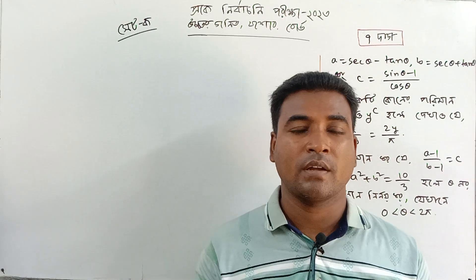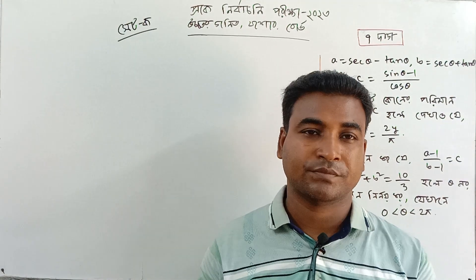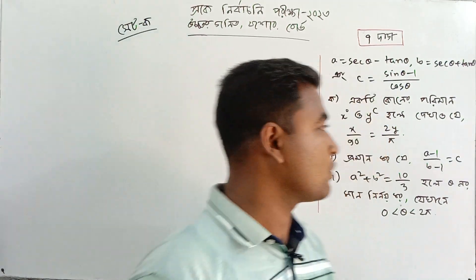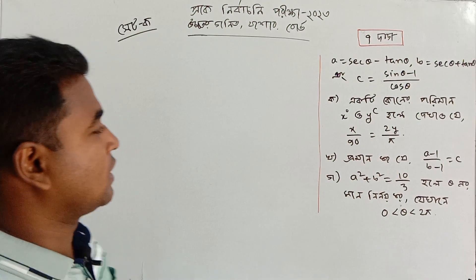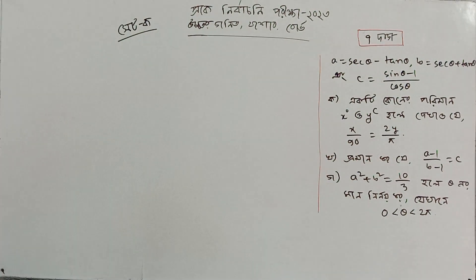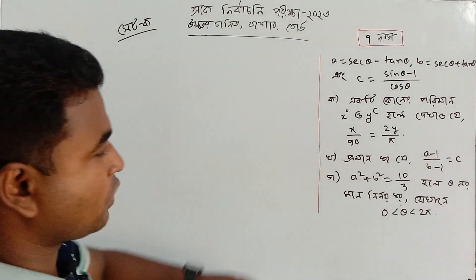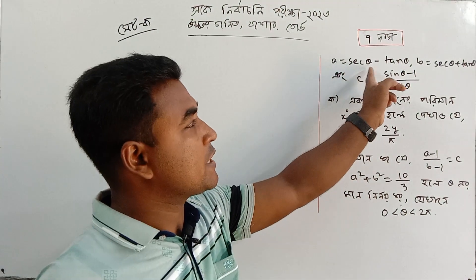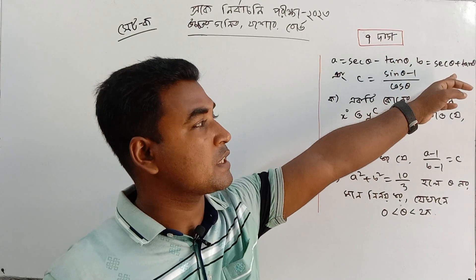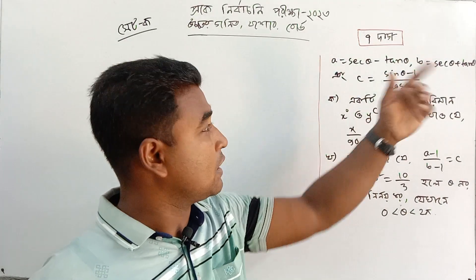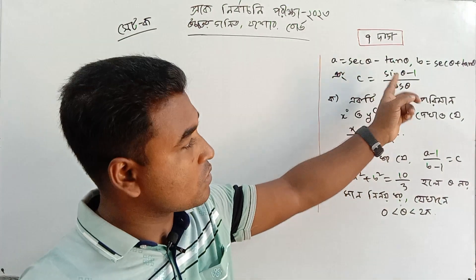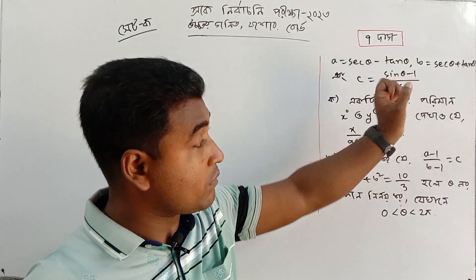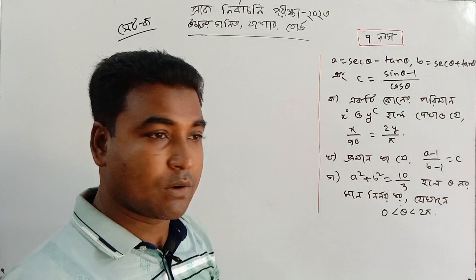So let's see the class: A is equal to sec theta minus tan theta, and B is equal to sec theta plus tan theta, and C is equal to sin theta minus 1 by cos theta.